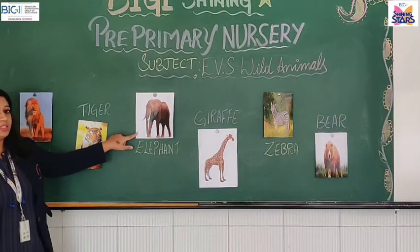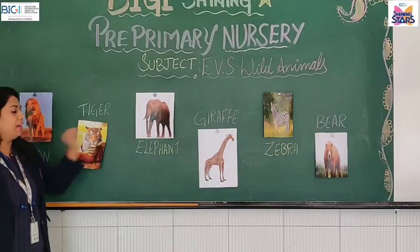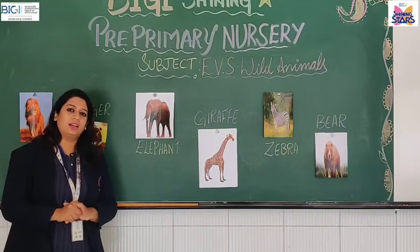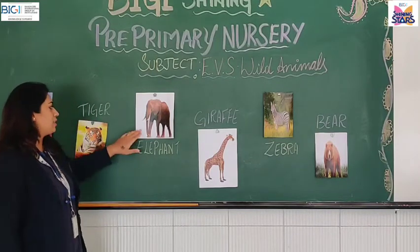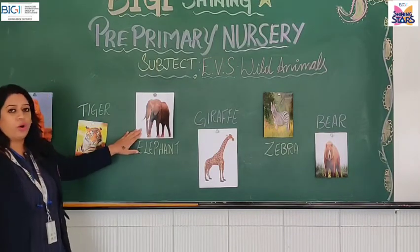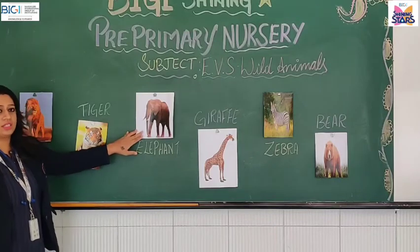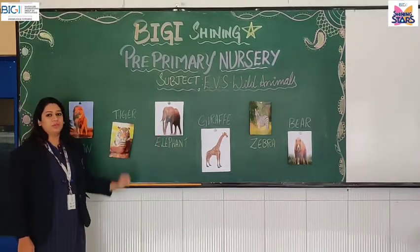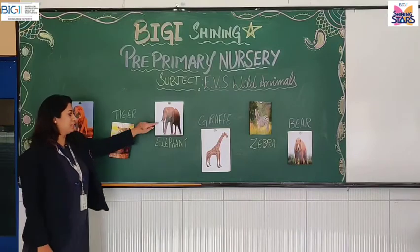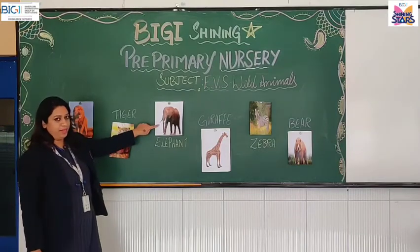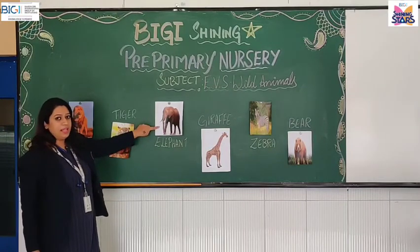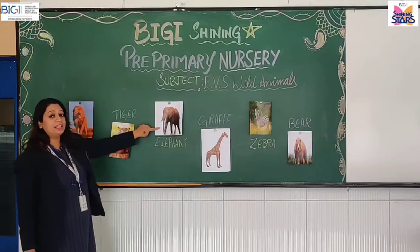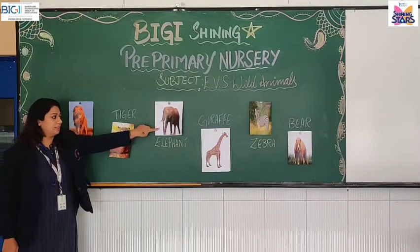You know what an elephant eats? It loves to eat sugar cane, banana, and grass. All the grass and leaves available in the forest, this elephant will eat. So, this is an elephant, a wild animal and the largest land animal on the earth.